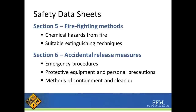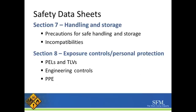Section six is what to do during an accidental release. It will have emergency procedures, protective equipment, and precautions. It also tells you how to contain and clean up that chemical. Section seven is handling and storage — precautions for safe handling and storage. Section eight is the exposure controls and how to protect yourself, including the required PPE — personal protective equipment — that must be used while using this chemical.